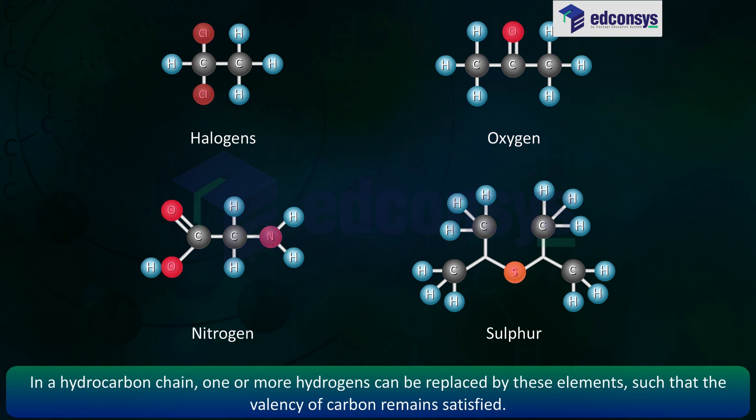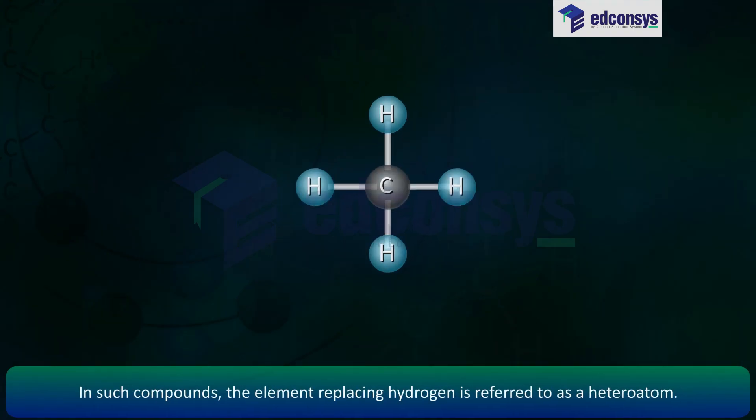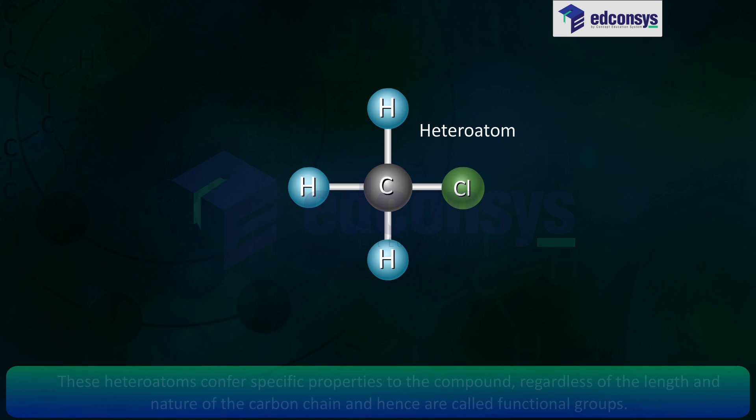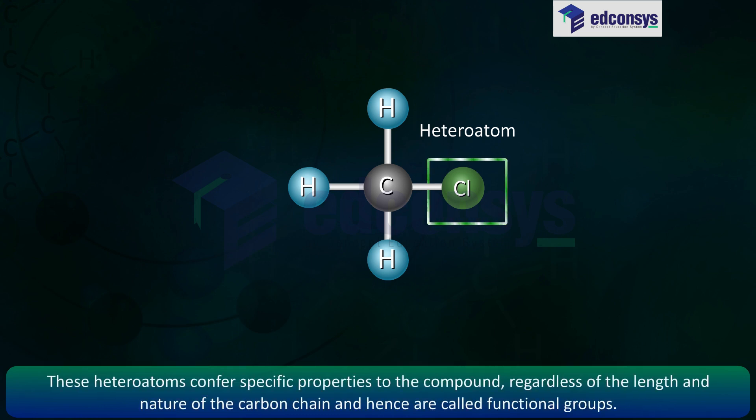In a hydrocarbon chain, one or more hydrogens can be replaced by these elements such that the valency of carbon remains satisfied. In such compounds, the element replacing hydrogen is referred to as a heteroatom. These heteroatoms confer specific properties to the compound regardless of the length and nature of the carbon chain and hence are called functional groups.